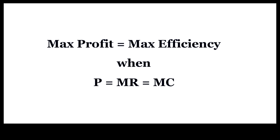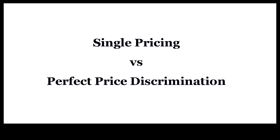When price is equal to marginal revenue, both profit and efficiency are maximized. Whether price is equal to marginal revenue or not depends on how pricing is done. We will compare two modes of pricing, namely single pricing versus perfect price discrimination.